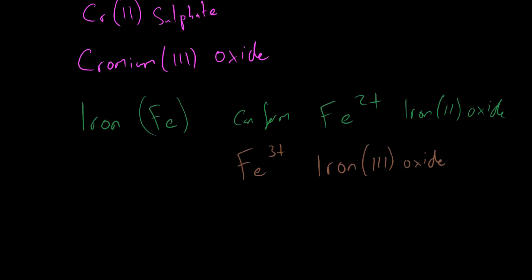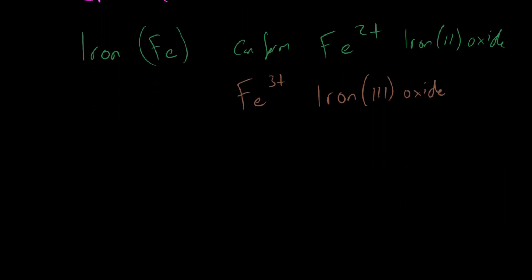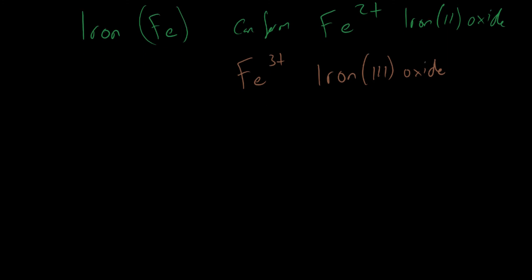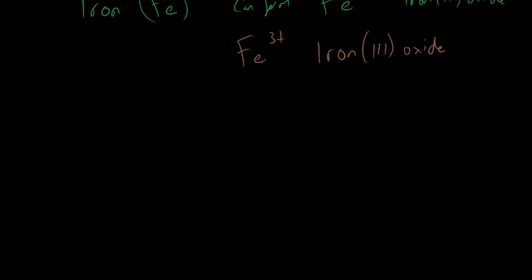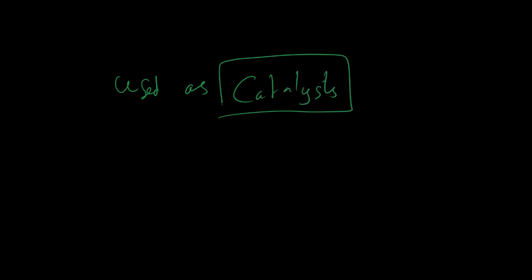Now, one final point to make on transition metals is due to the fact that they can change their charge, they are very useful as catalysts. So they are commonly used as catalysts. You don't need to know exactly why and how that works. But because they have these special chemical properties, we can use them as catalysts.